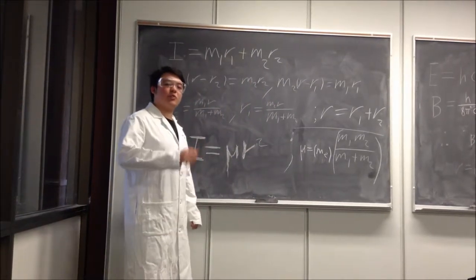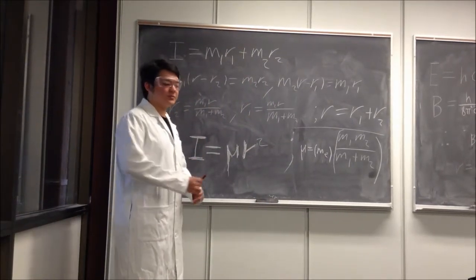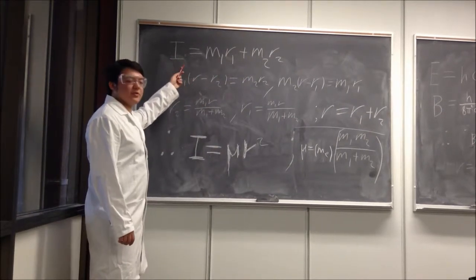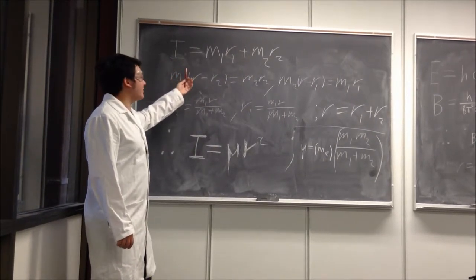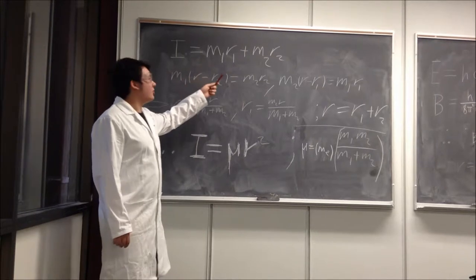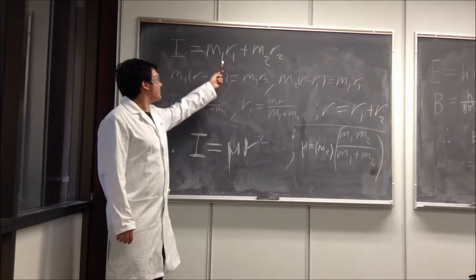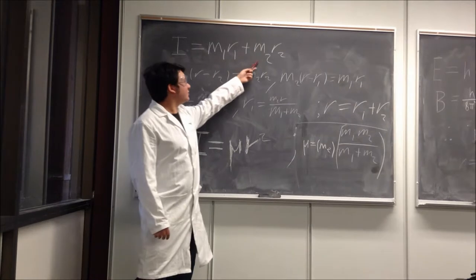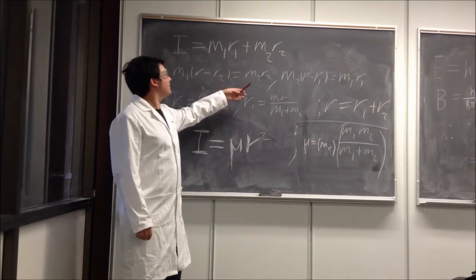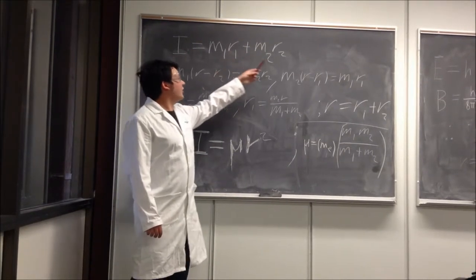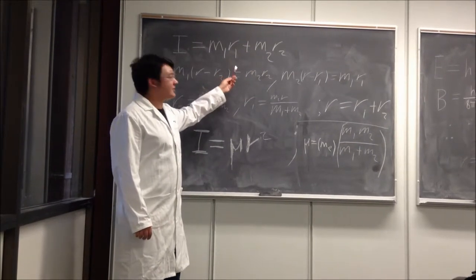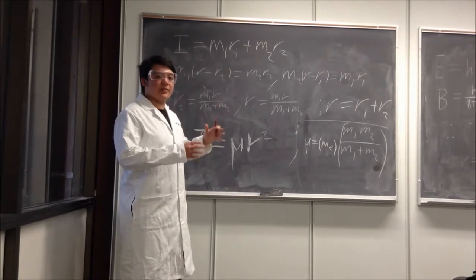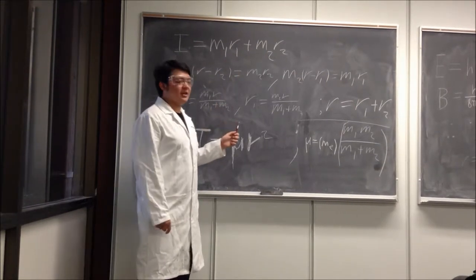To do this we'll be using the rigid rotor model. As you can see here, I have an equation for moment of inertia and in this equation we are actually using the rigid rotor system where we have mass 1 and mass 2.